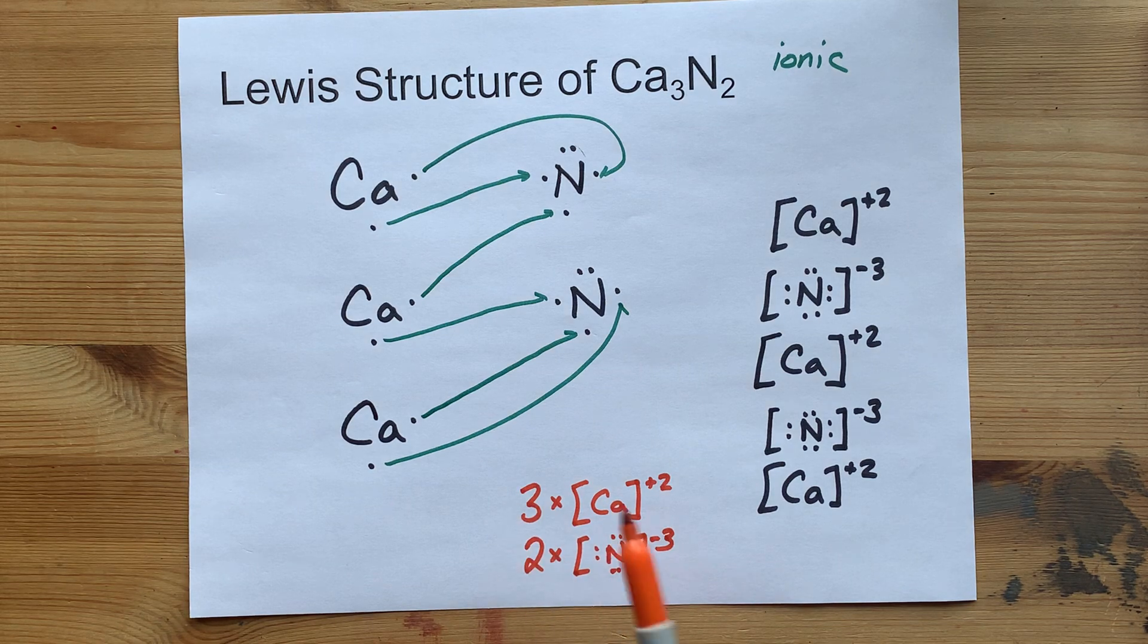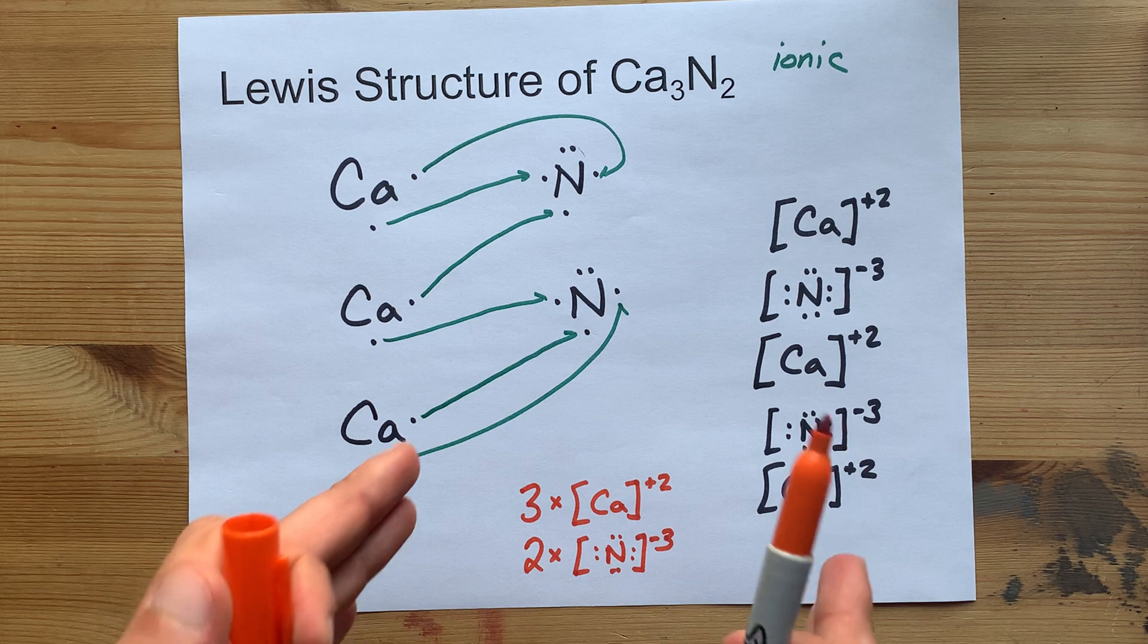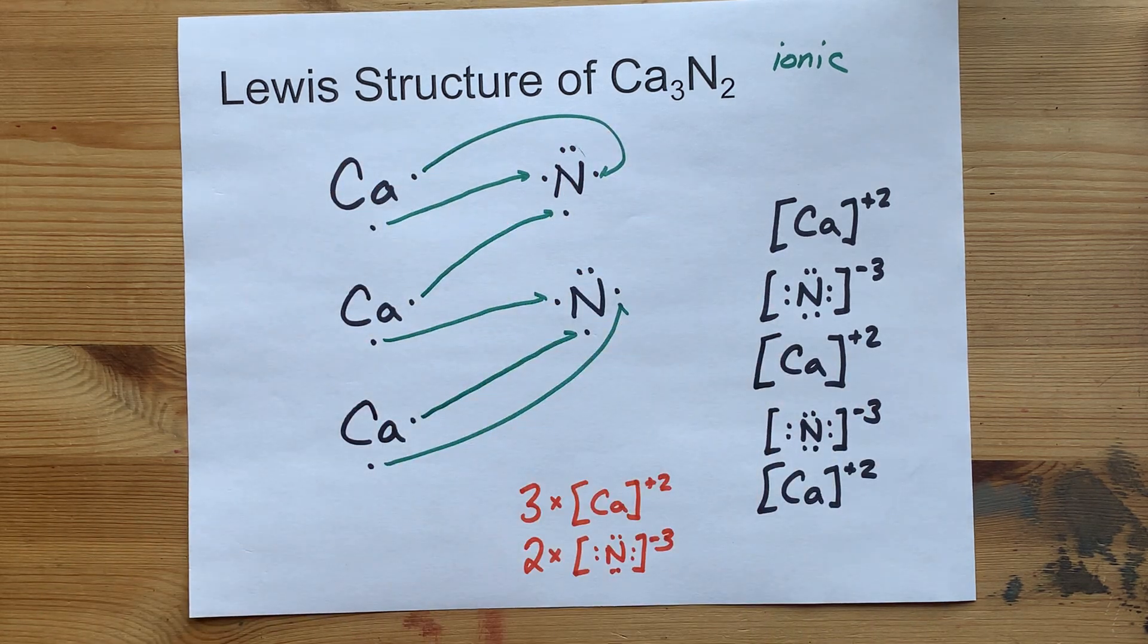Again, this is a shortcut that you might be allowed to take. This is the official ionic Lewis structure for calcium nitride.